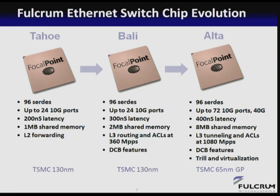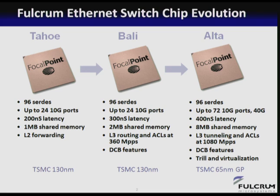The scaling of the data center is always demanding more bandwidth. This led to a pretty challenging specification for our Alta device: a 3x increase in port count from 24 to 72, increases in shared memory, all table sizes increased by at least a factor of four, and a long slew of protocols that marketing guys were adding every day. We targeted 65-nanometer GP process TSMC.